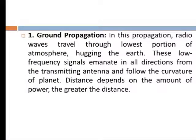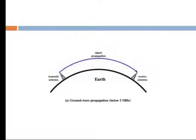In ground propagation, the radio wave travels through the lowest portion of the atmosphere, hugging the earth. The low-frequency signal emanates in all directions from the transmitting antenna and follows the curvature of the planet. The distance depends on the amount of power. Ground wave propagation is used to propagate signals at frequencies below 2 MHz.